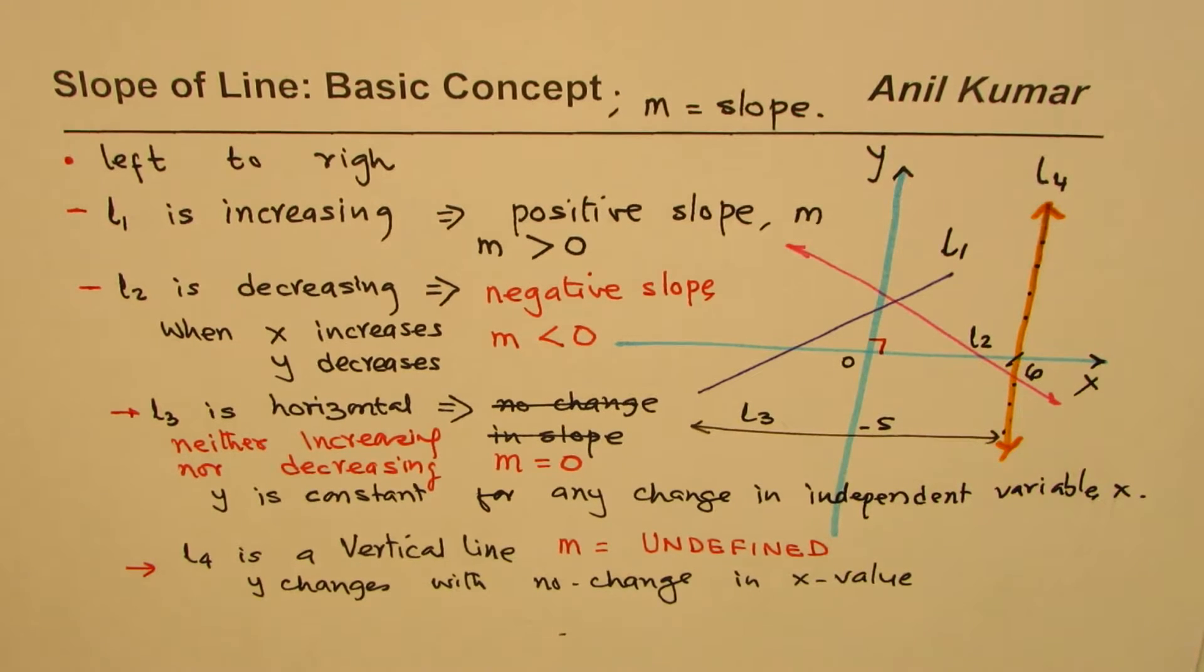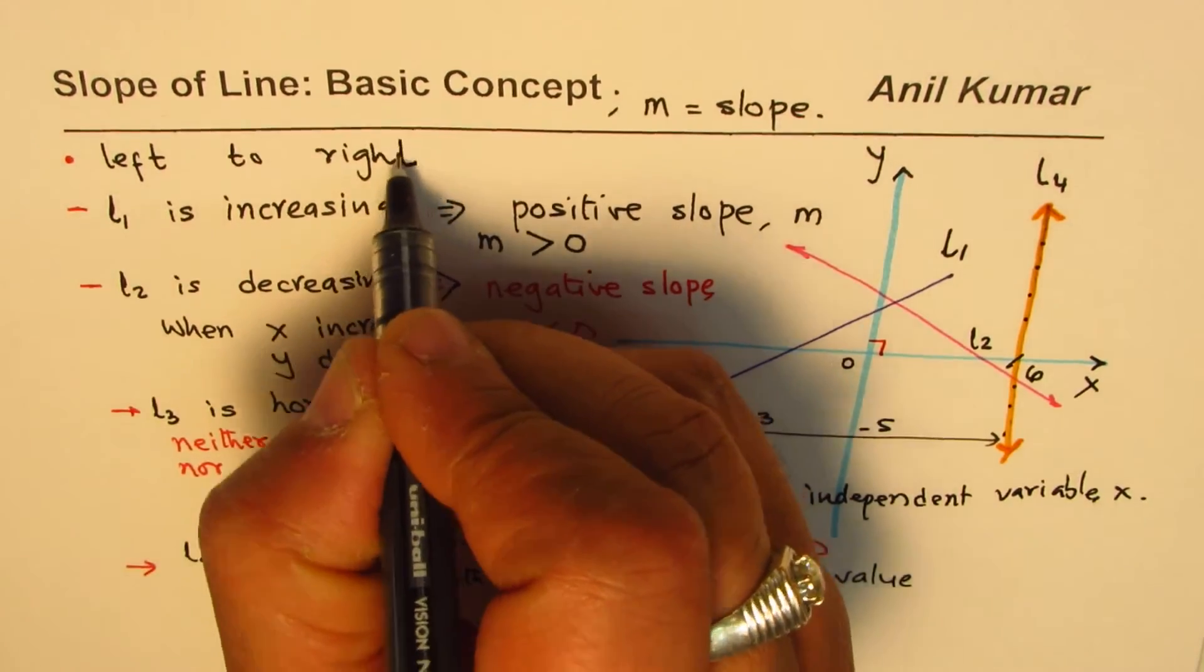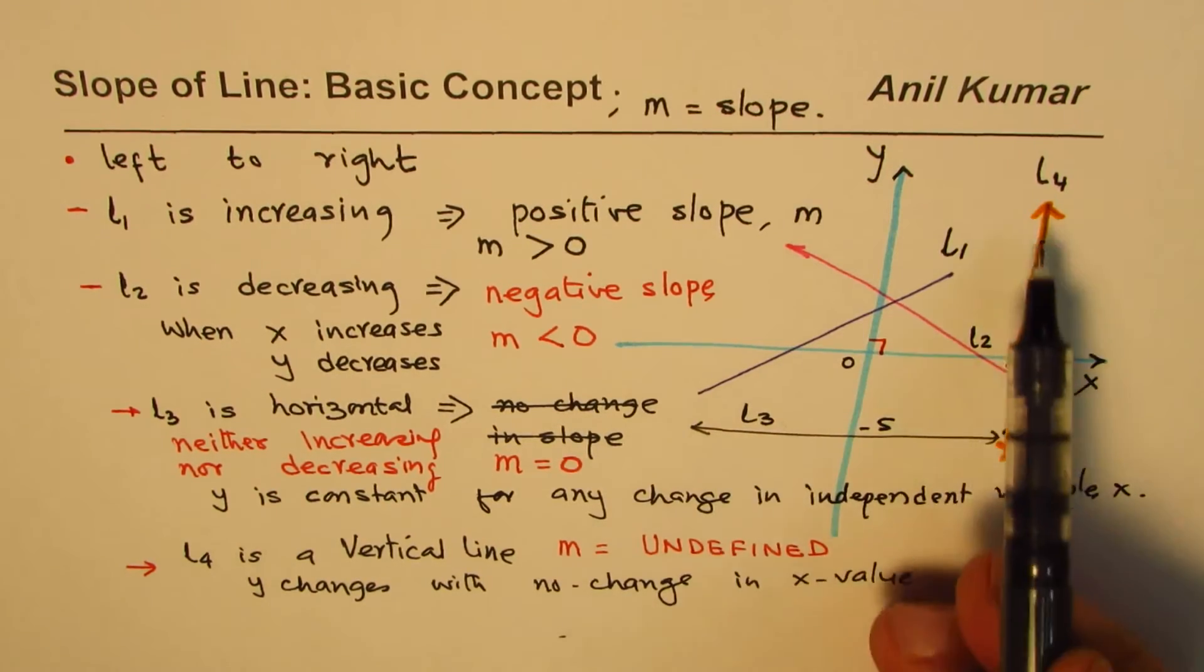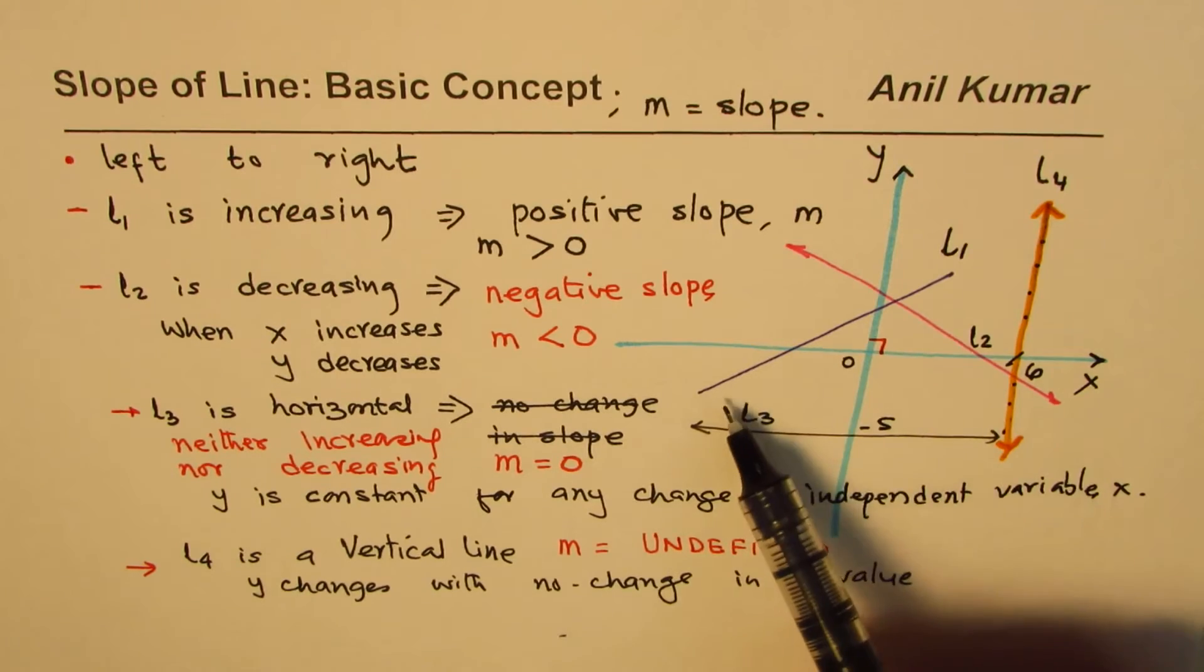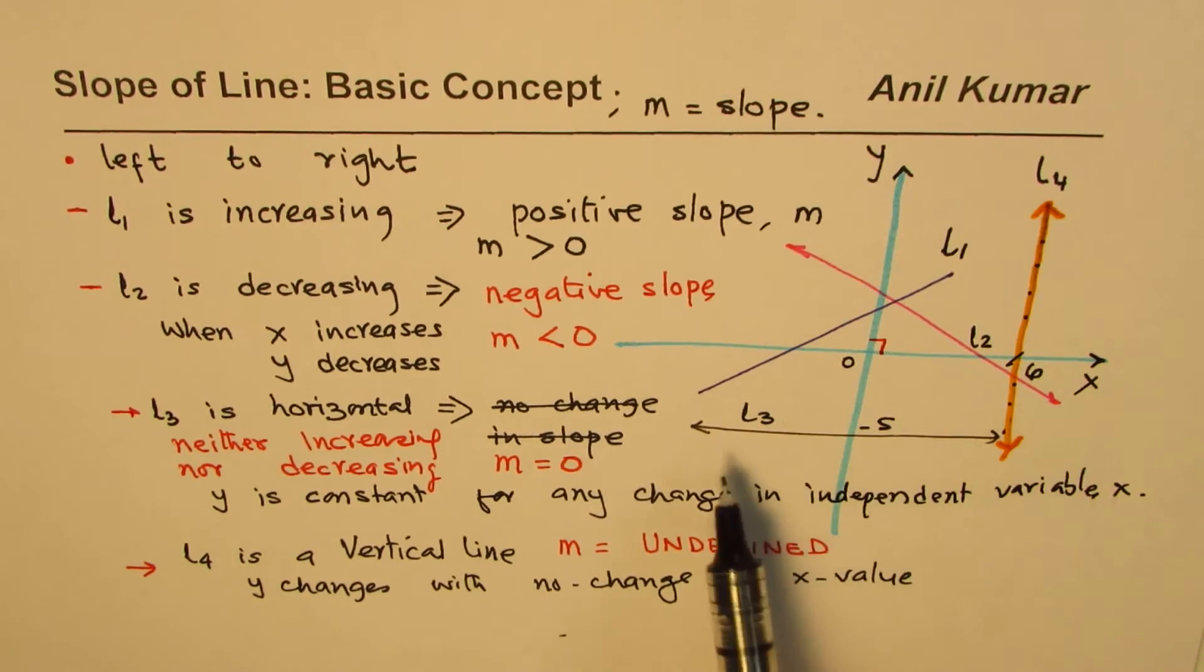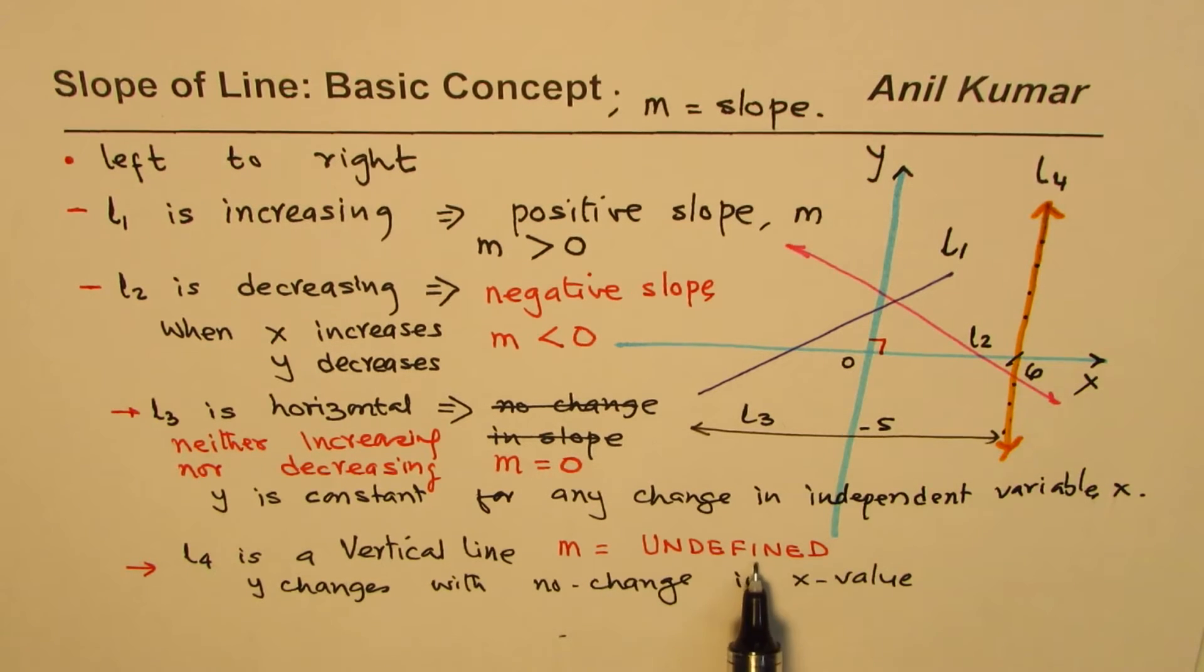These are different types of lines which you could draw. Lines are always seen from left to right. And they could be either increasing, decreasing, horizontal, or vertical. If they are increasing, the slope is positive. If they are decreasing, slope is negative. If they are horizontal, slope is 0. If they are vertical, slope is undefined.